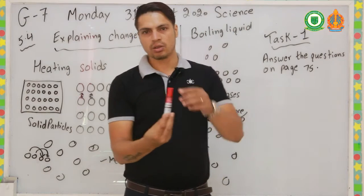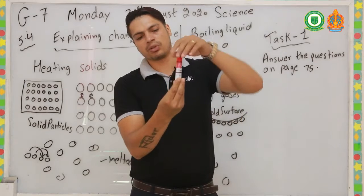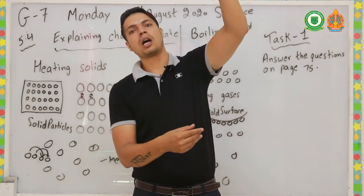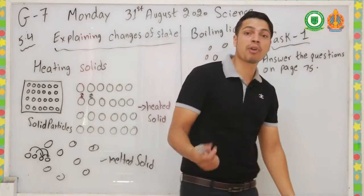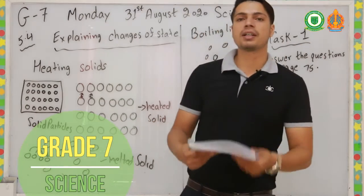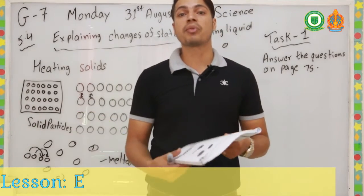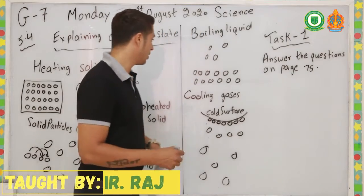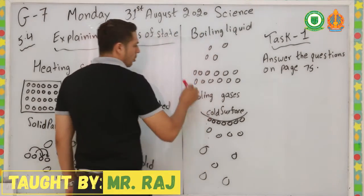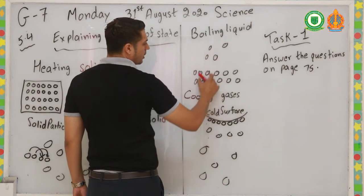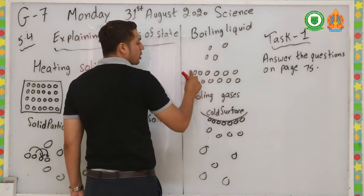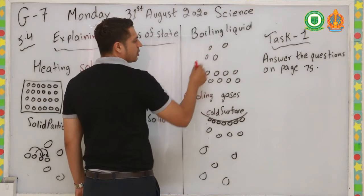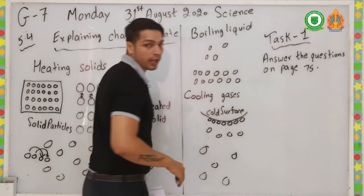Imagine a particle of liquid held together by attractive force — like my hand holding it. As we heat up, the particle can break the attractive force and go up into the air. That's when we see vapor or steam — the particles break the weak attractive forces, move freely in the air, and become gas. When we boil a liquid, the particles can no longer stay because they lose their attractive forces and start moving freely into the air.